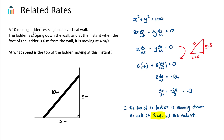We have a 10-meter long ladder — the thick black line here — and it's resting against a vertical wall. The ladder is slipping down the wall, so the top of the ladder will be slipping down and the foot of the ladder will be slipping out. We know that at the instant when the foot of the ladder is 6 meters from the wall, it is moving at 4 meters per second. The question is: at what speed is the top of the ladder moving at this instant?